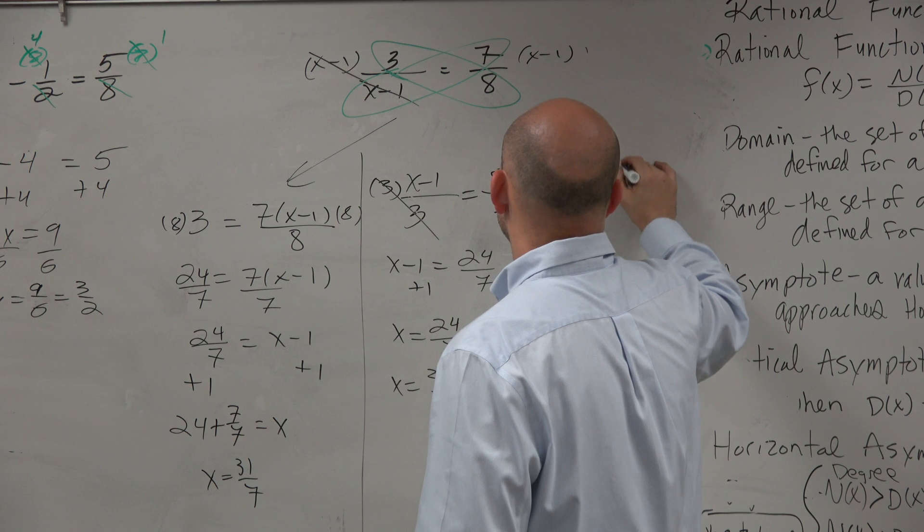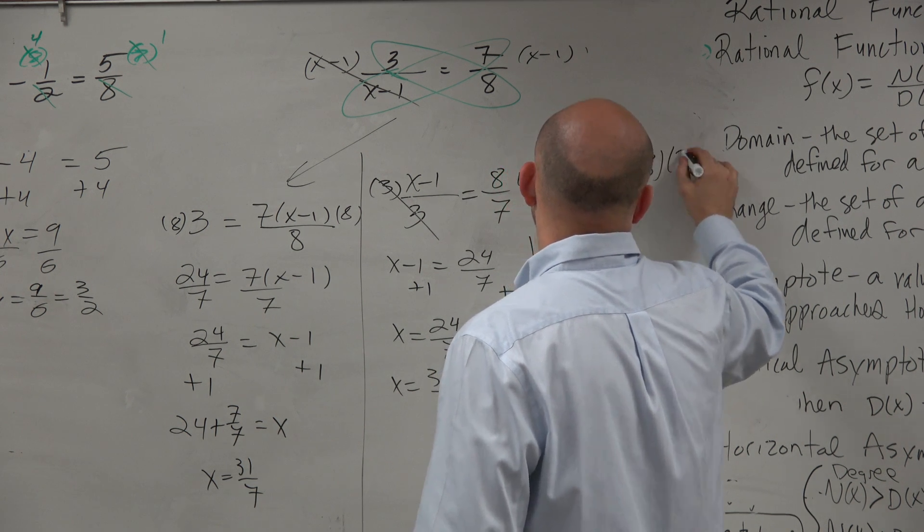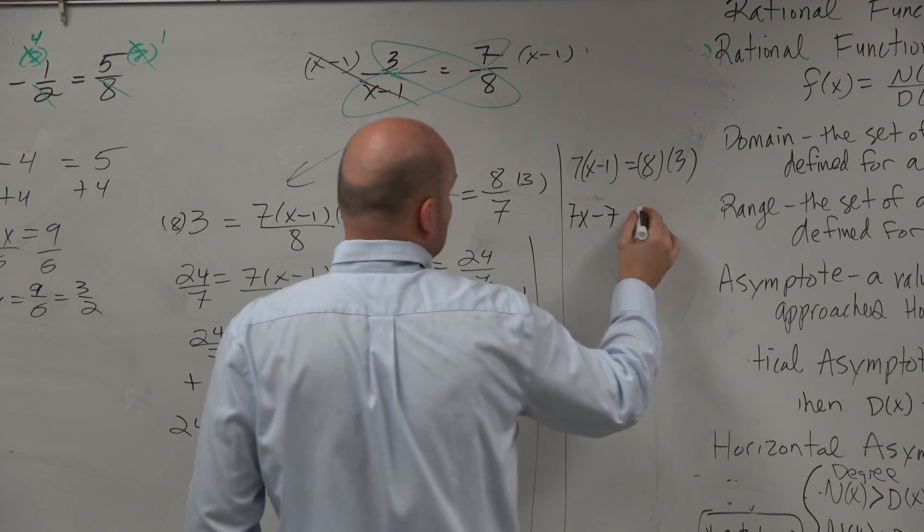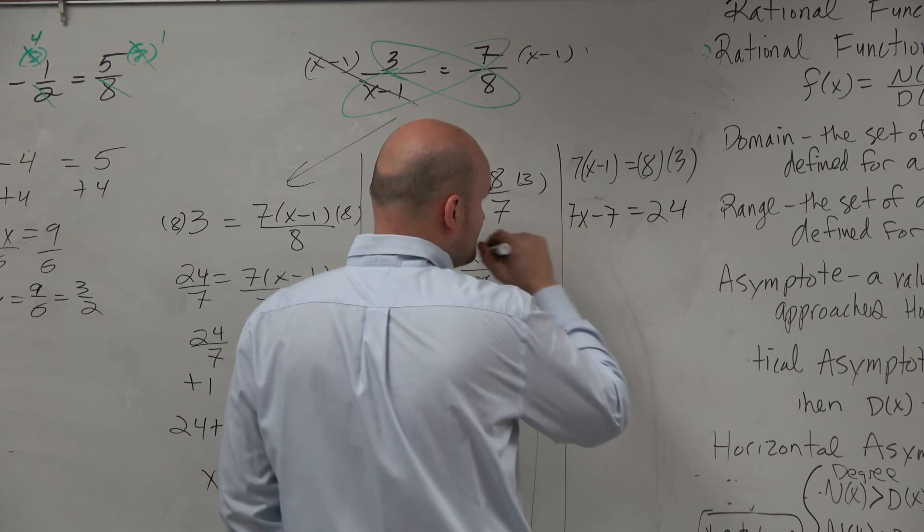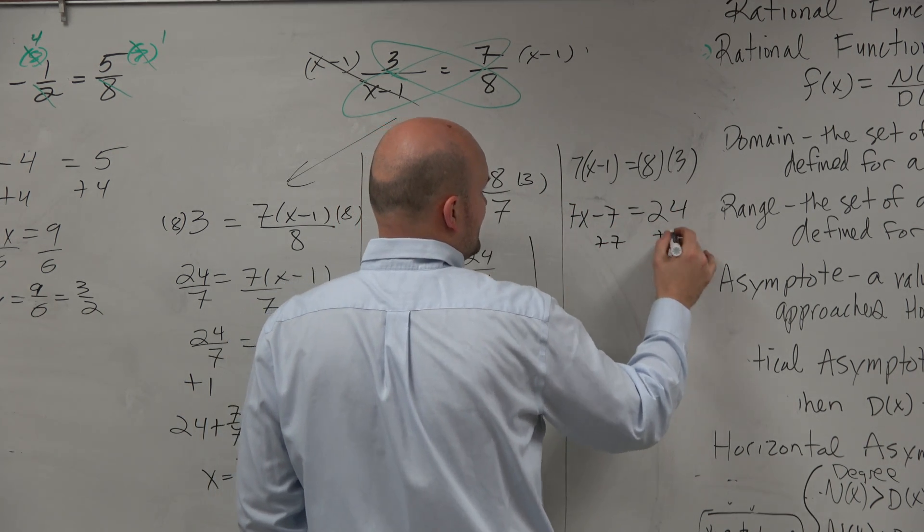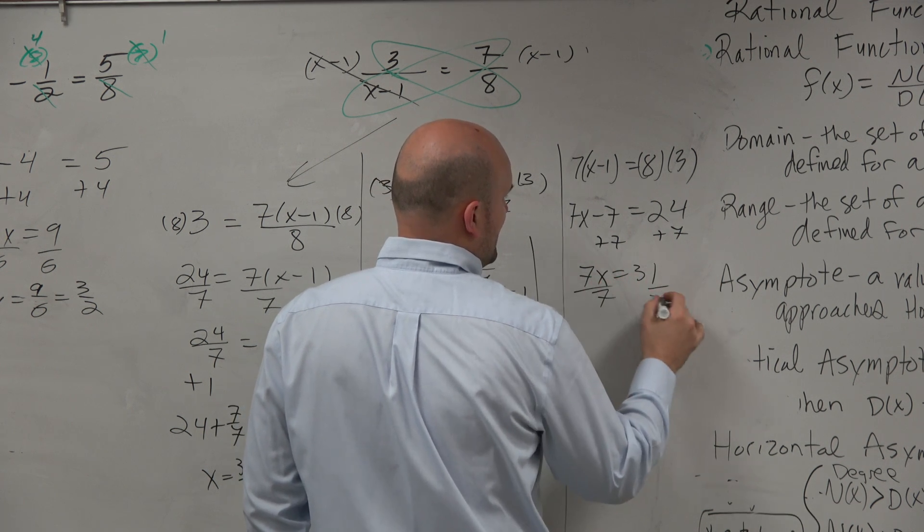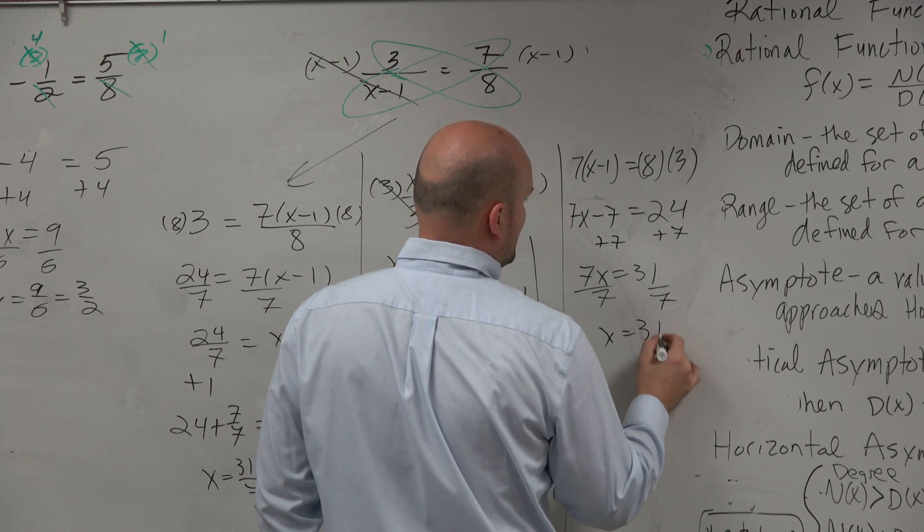7 times x minus 1 equals 8 times 3. And therefore, you get 7x minus 7 equals 24. Plus 7, plus 7, 7x equals 31. Divide by 7, x equals 31 over 7.